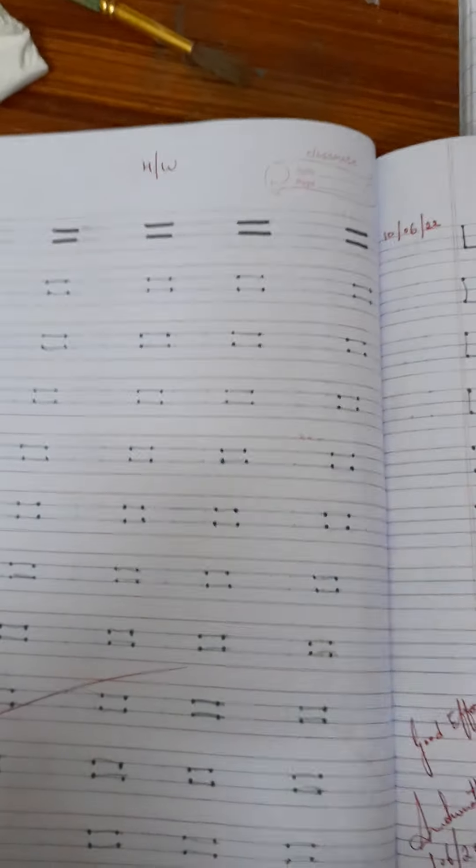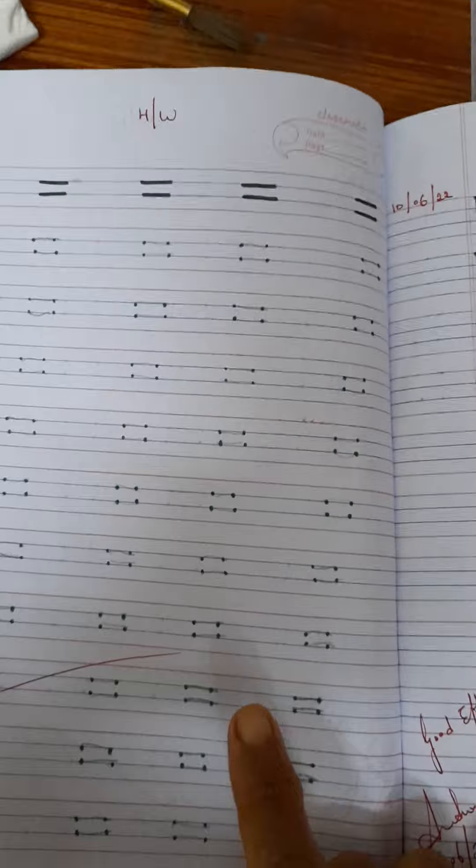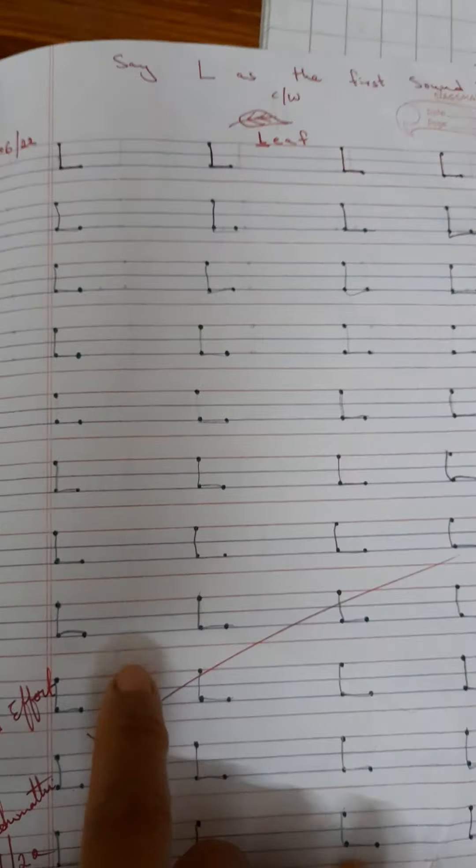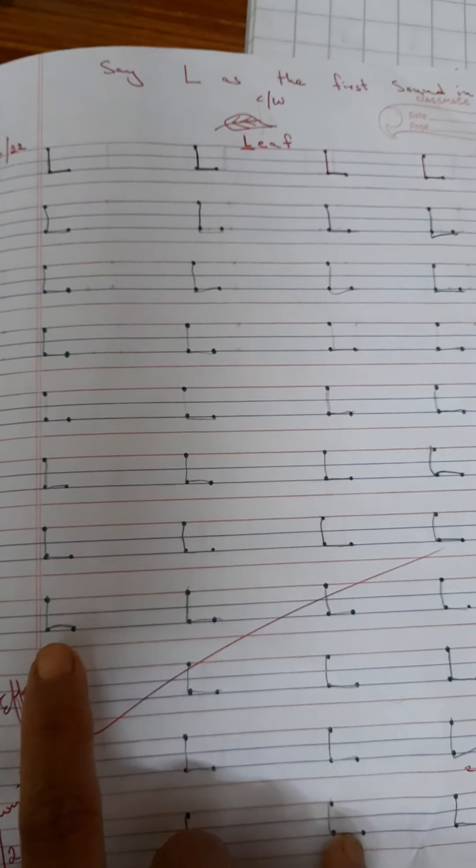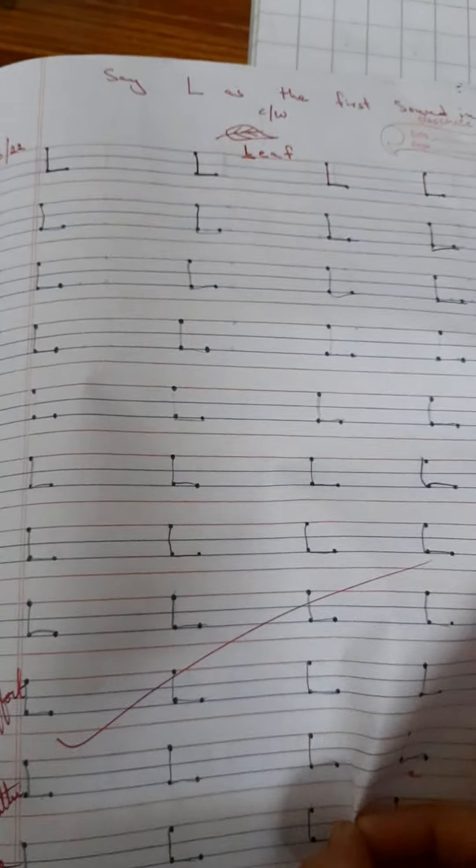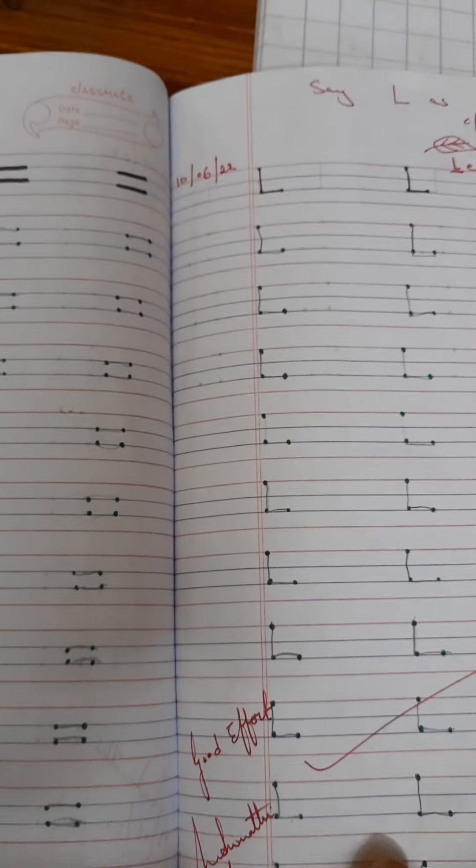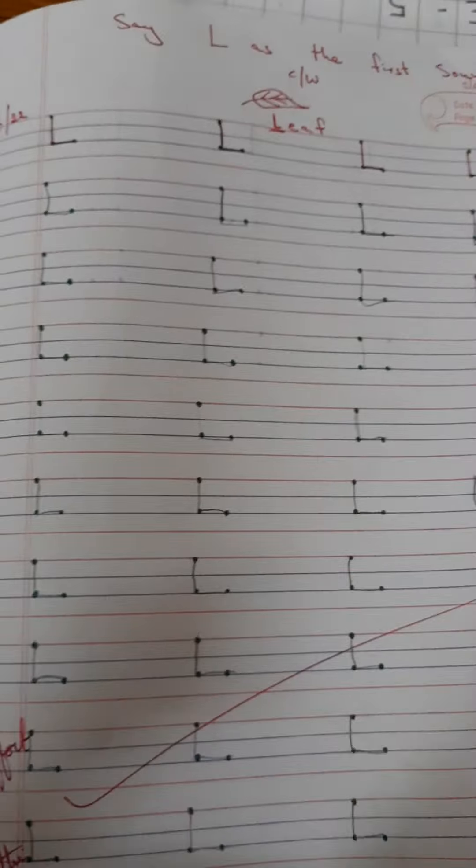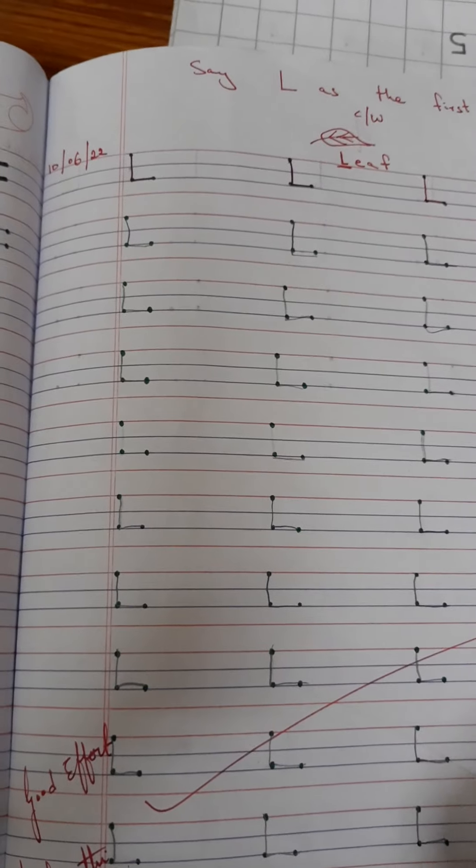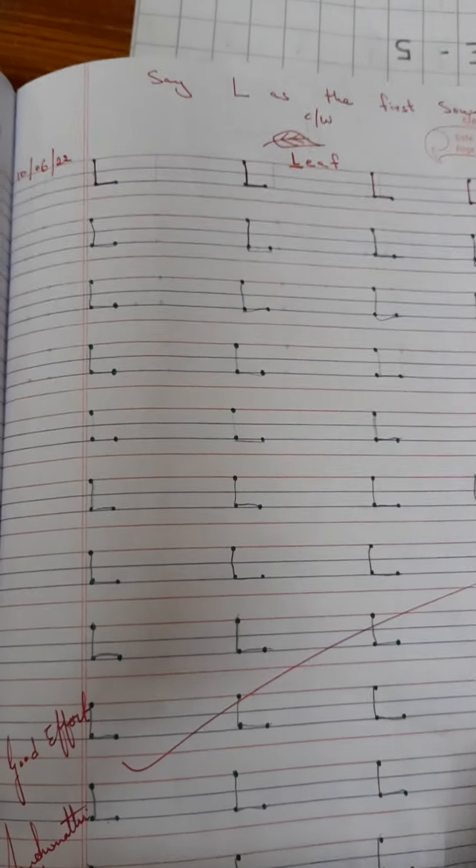Once the child has mastered standing and sleeping lines, I will go with the alphabets starting with L, T, H, I, and E and F. These are the words formed using standing and sleeping line.